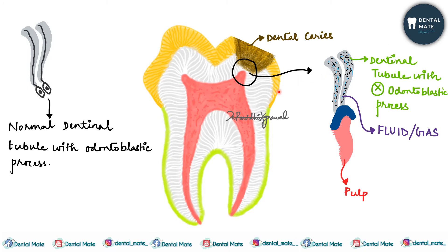Why do they appear black? In dried ground sections of normal dentine, the odontoblasts degenerate and the empty dentinal tubules are filled with air. Because they contain air, in transmitted light they appear black, whereas in reflected light they appear white.